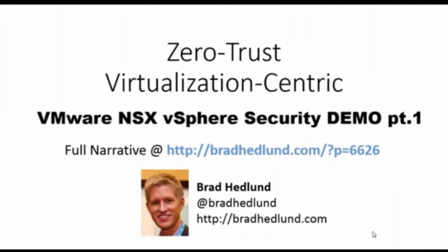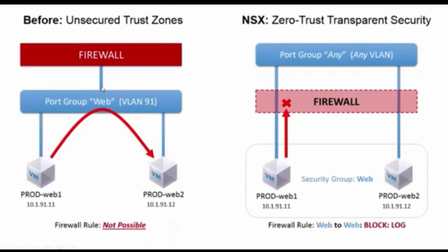This is Brad Hedlund. We're going to do a quick demo here with VMware NSX for vSphere security. I'm going to show some zero-trust micro-segmentation as well as virtualization-centric grouping. This demo goes along with a blog I wrote — you can read the full blog at the URL shown on screen. We're going to start with this environment on the left: we basically have two virtual machines on the same trust zone with no inspection of any traffic between those two VMs. There's really no security or visibility controls because the firewall is bolted on top and doesn't have any control over that environment. So we're going to take that existing environment, add in NSX, create a security group, add the VMs to that group, apply a policy, and the transparent distributed firewall within NSX will take action. We'll even look at some of the logs.